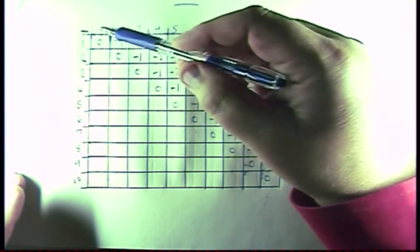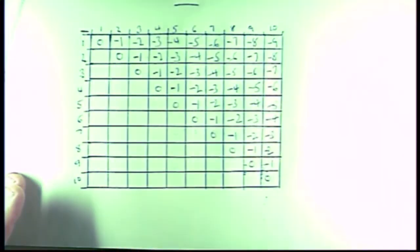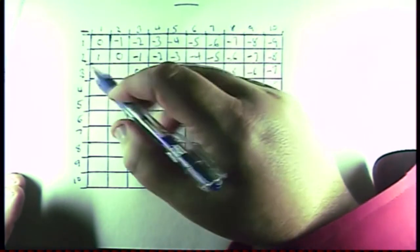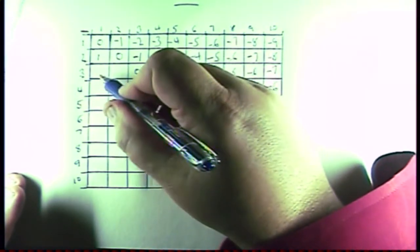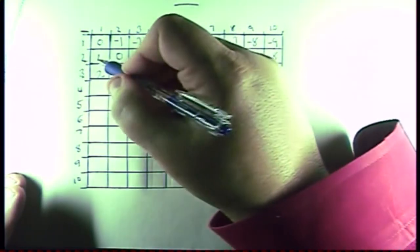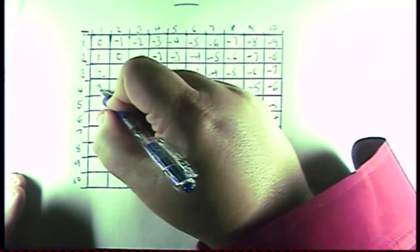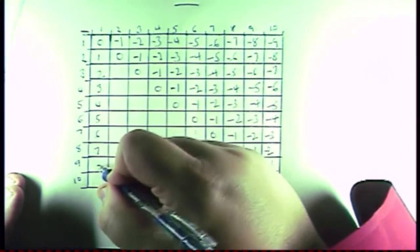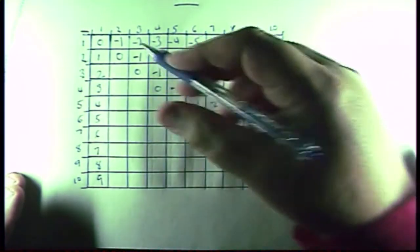Now, what about on the other side? 1 minus 2, or 2 minus 1 is a 1. 3 minus 1 is a 2. Okay, and so what we could do is we can just count down here. 1, 2, 3, 4, 5, 6, 7, 8, 9. Again, right here we start with the 1 again.